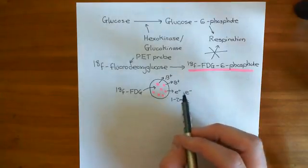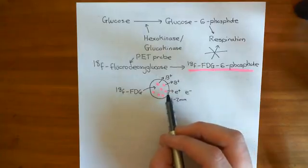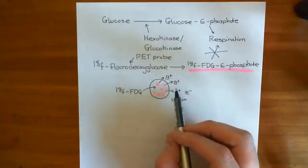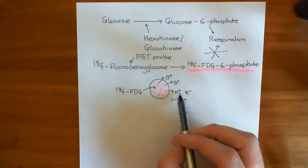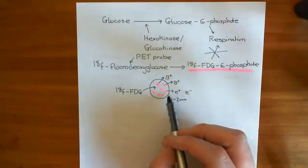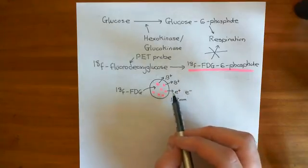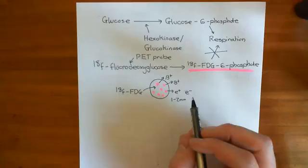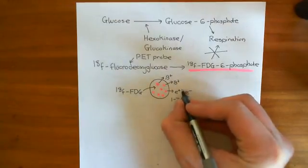There are electrons everywhere, but they're very far apart. And the chance of this positron hitting one is quite low. So it travels about 1 to 2 millimeters before it finally collides with one. And then they annihilate and they give off photons. So here are these gamma photons coming off.